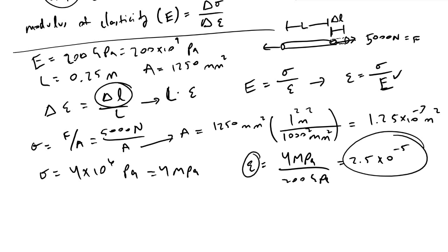Now that we have our epsilon value, we are simply going to multiply it by the length of our rod. We're going to have 2.5 times 10 raised to the minus 5, and then our rod had a length of 0.25 meters initially, and this will be equivalent to our change in length. This is equal to 5 times 10 raised to the minus 6 meters, which is equal to 5 micrometers.